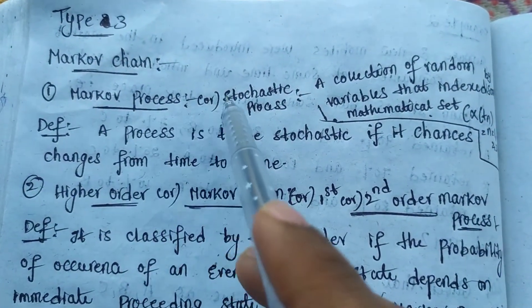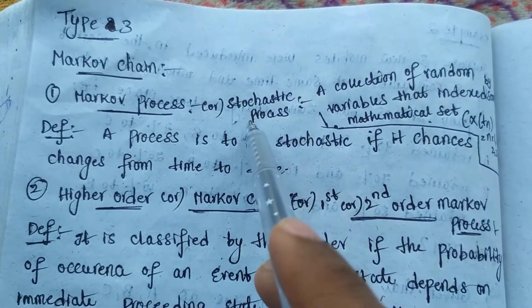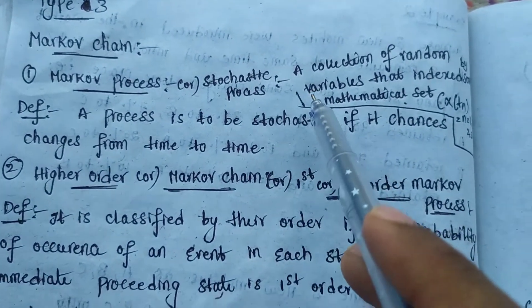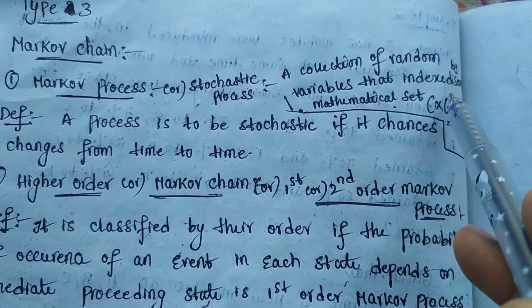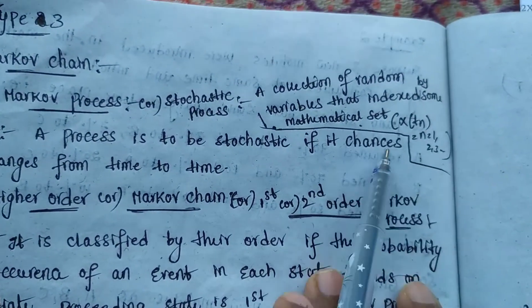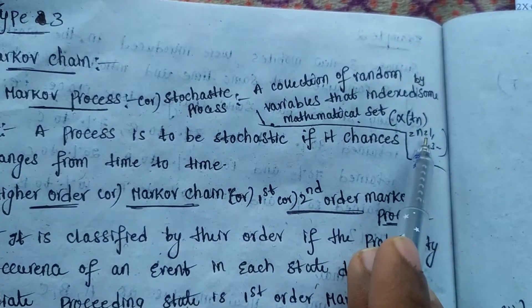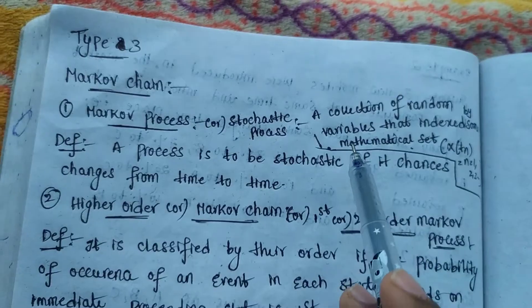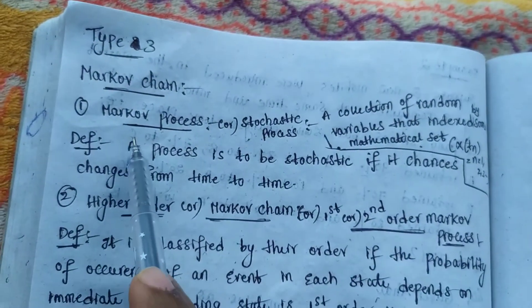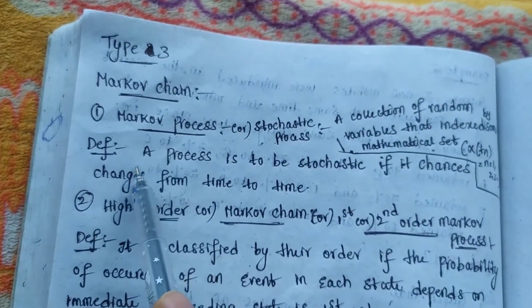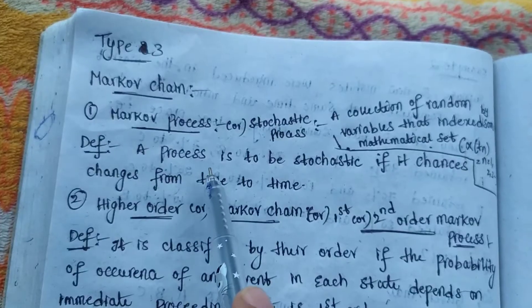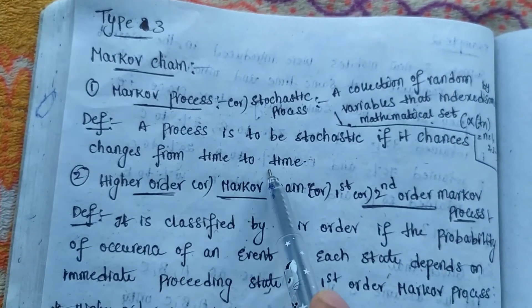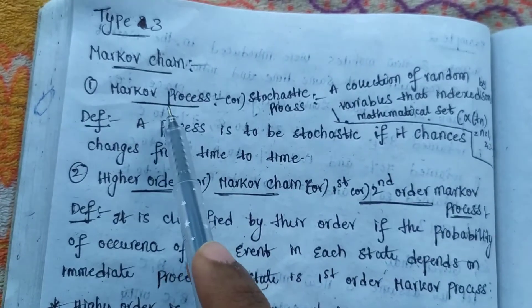The Markov process and stochastic process are the same. First, the stochastic process definition: it is a collection of random variables indexed by some mathematical set, that is X(t), where n equals 1, 2, 3, and so on. The Markov process definition is: a process is said to be stochastic if it changes from time to time, and is called the Markov process.